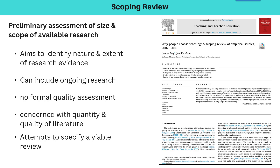A scoping review does as it sounds: it presents an assessment of the size and scope of available research on a particular topic. A key difference here is that it can include ongoing research. There is no formal document quality assessment — it is more concerned with showing the overall scope of published research to date, not the quality of each study. In this example, they give a time span from 2007 to 2016 and are only concerned with empirical studies on the choice of teaching, going for a very large scoping view of the literature.